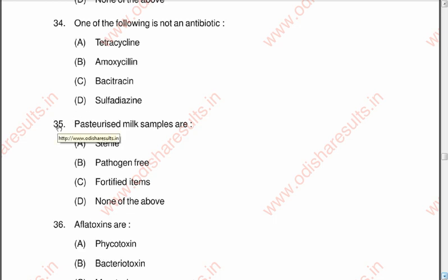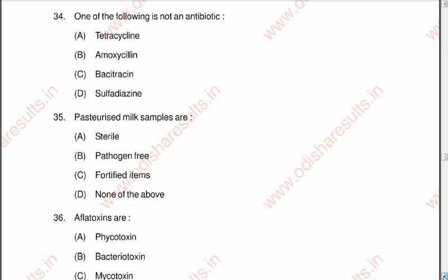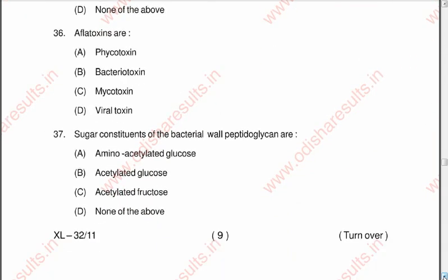Question 35: Pasteurized milk samples are A sterile, B pathogen free, C fortified items, D none of the above. The correct option is B, pathogen free. Question 36: Aflatoxins are A phycotoxin, B bacteriotoxin, C mycotoxin, D viral toxin. The correct option is C, mycotoxin.